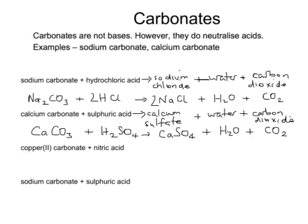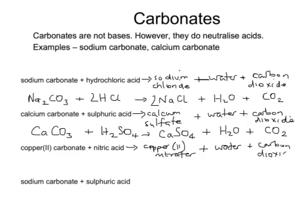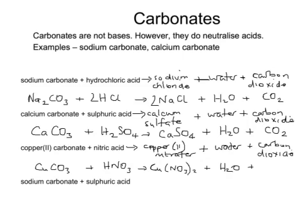The third equation: copper carbonate with nitric acid. The salt will be copper 2 nitrate, plus water, plus carbon dioxide. In symbols, copper 2 carbonate is CuCO₃. Nitric acid is HNO₃. Copper 2 nitrate is made out of a copper 2+ ion and an NO₃⁻ ion, so we need two nitrate ions to go with each copper — hence the bracket to show the whole nitrate is doubled: Cu(NO₃)₂. Plus water, plus carbon dioxide. We've got two nitrates on the right and only one on the left, so we put a 2 in front of HNO₃, which also balances the hydrogens on each side.